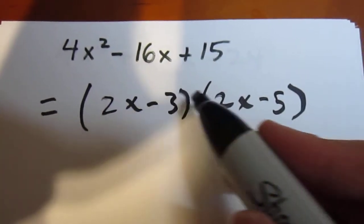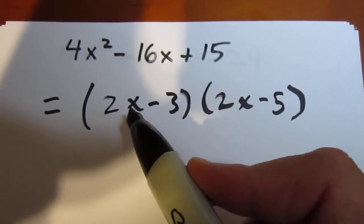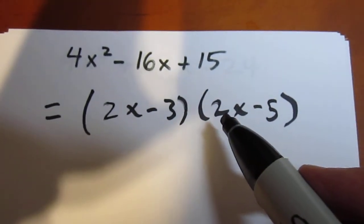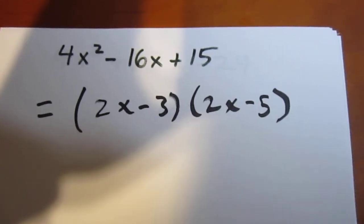So, I try them. 2x times 2x is 4x squared minus 10x minus 6x, so that works, plus 15. I got it.